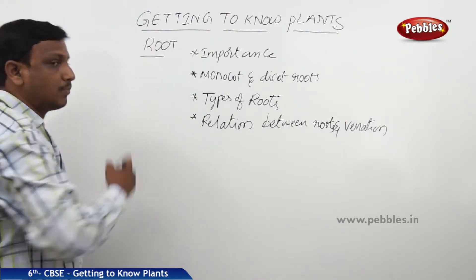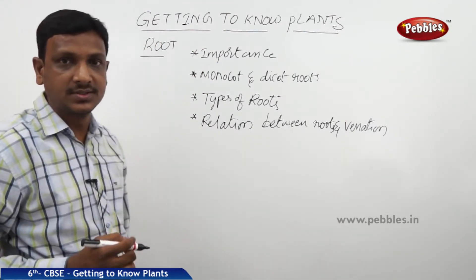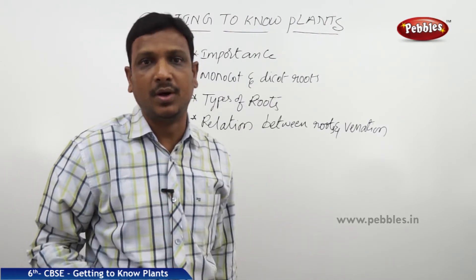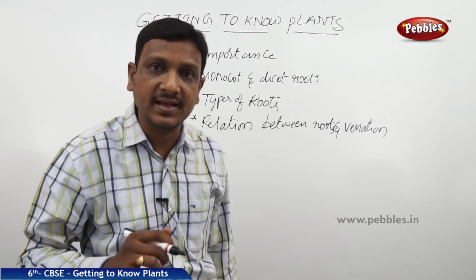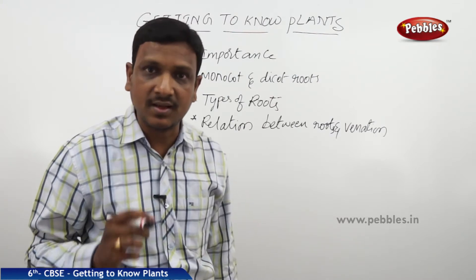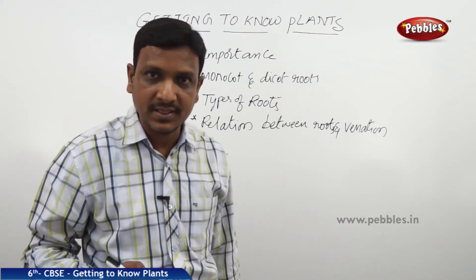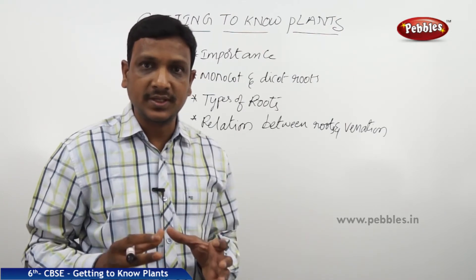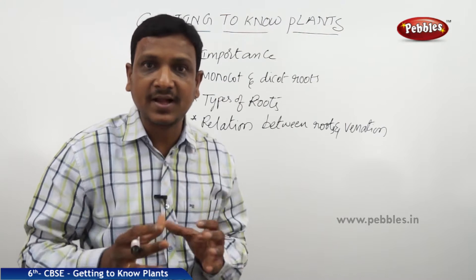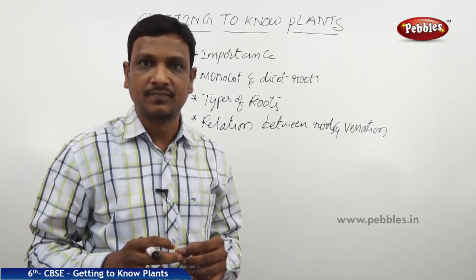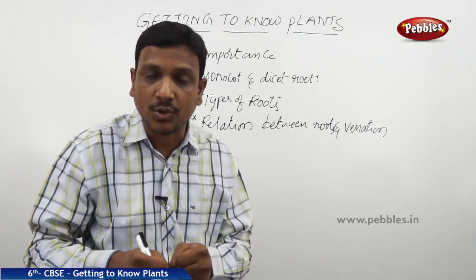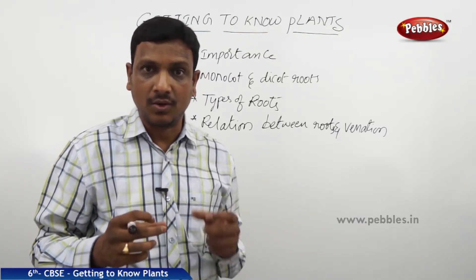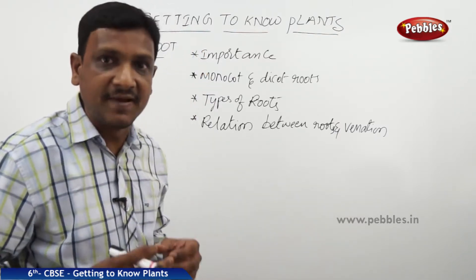Let us see the second important part, that is the root. Root is also a very important part of the plant. As with the stem and leaf we discussed, now let us see the root. It has the main function of anchoring the plant into the soil, so the plant holds the soil with the help of the root.